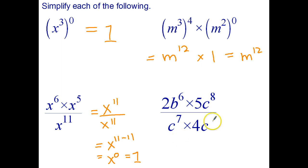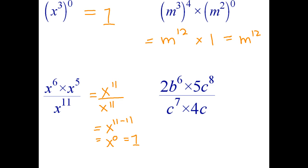Okay, and the last question. I'll just give myself a little bit more space here. So what I'm going to do first is simplify the numerator. Multiply the coefficients: 2 times 5 is 10, and b to the power of 6, c to the power of 8.